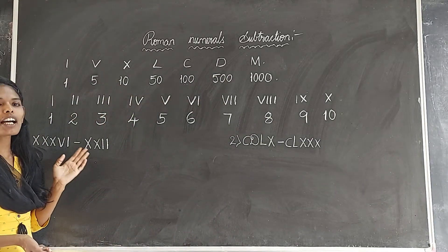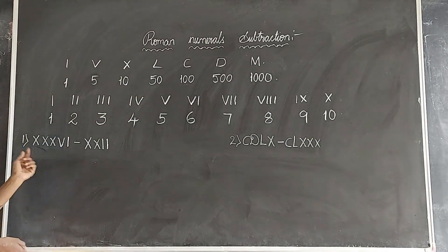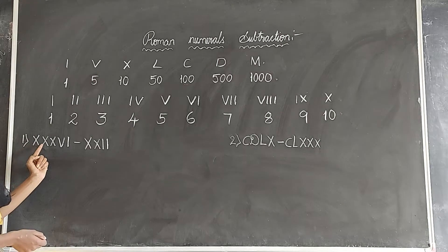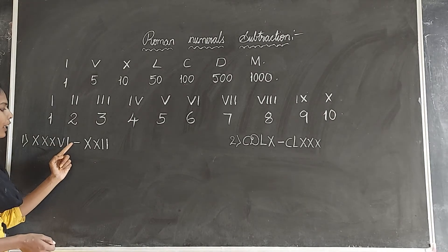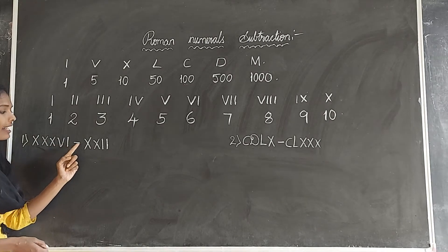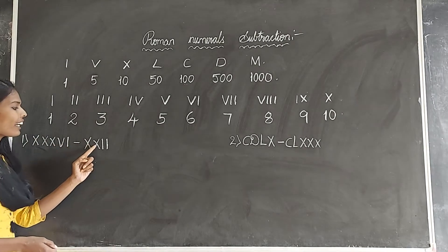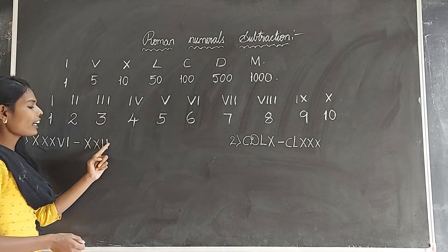Here we have the Roman numerals: X, X, X, V, I minus X, X, I, I. So we have XXXVI minus XXII.